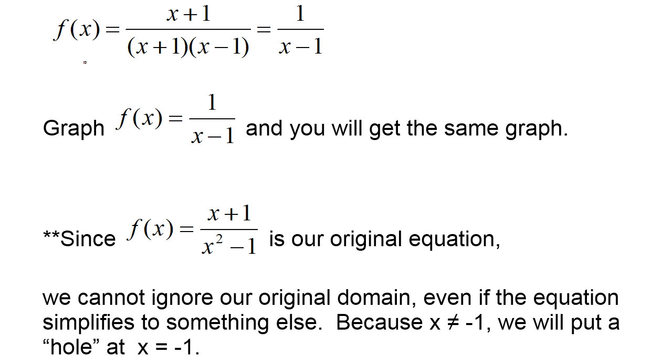So if you have a function, and it will factor and cancel to a simpler function, that's totally fine. We would graph f at x equals 1 over x minus 1. But since this is our original graph, you just can't ignore the domain. So if we're not allowed to use negative 1, we'll put a hole at negative 1.